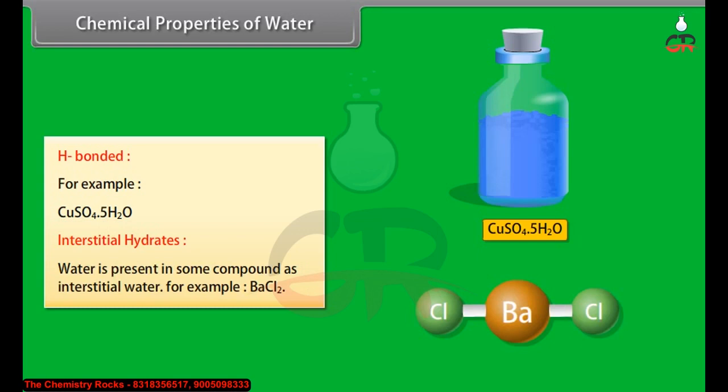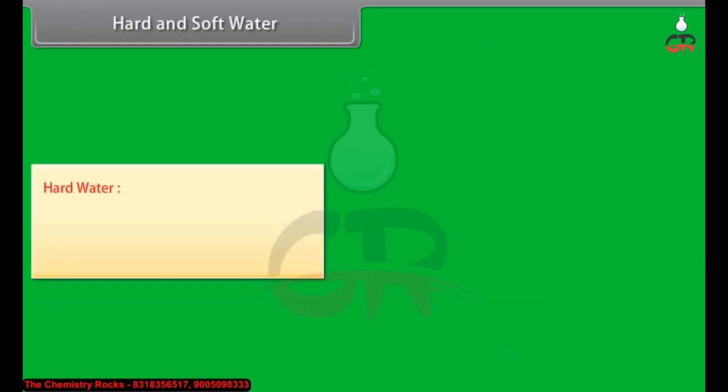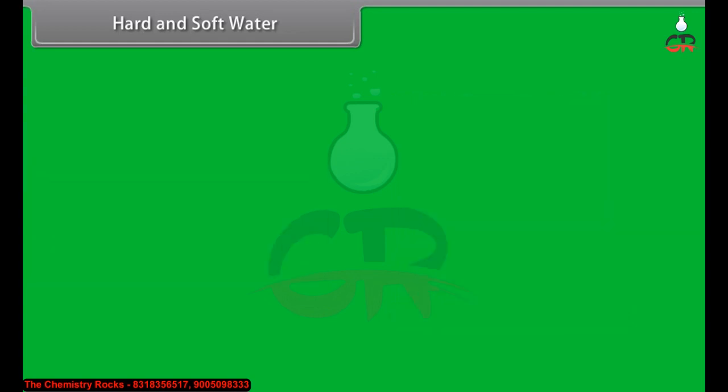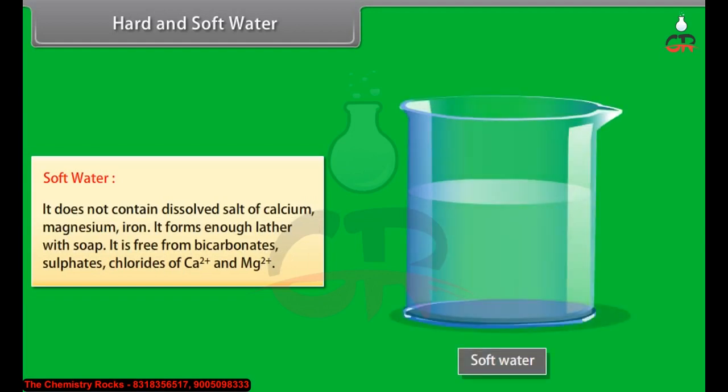Hard and soft water: Hard water is the water which contains dissolved salts of Ca2+, Mg2+, and Fe2+ - it does not form enough lather with soap. Soft water does not contain dissolved salts of calcium, magnesium, or iron. It forms enough lather with soap and is free from bicarbonates, sulfates, and chlorides of Ca2+ and Mg2+.